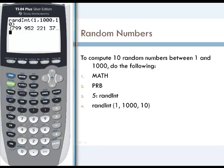The numbers are 799, 952, 221, and then as we scroll we can write down the other numbers: 370, 893, 61, 97, 549, and 856.